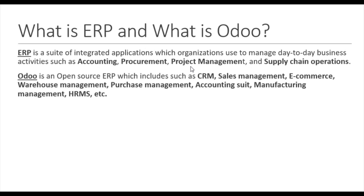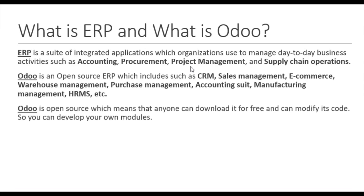Odoo also includes purchase management, accounting suite applications, manufacturing management, HRMS, and more. All these applications are available in Odoo and they are interlinked — this interconnection is what makes it an ERP. CRM, sales, and all these applications are interlinked with each other so every department works on its own application and all the data is synced.